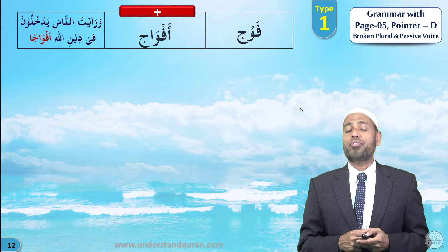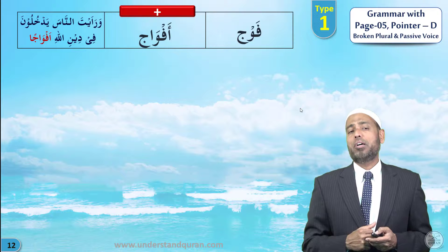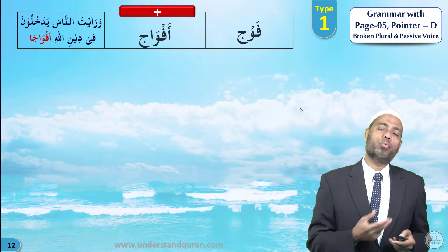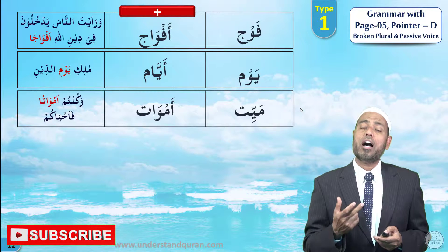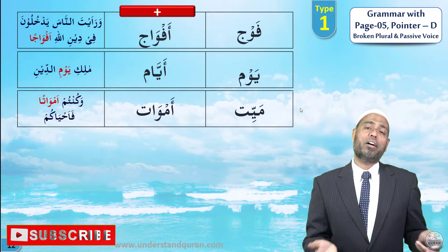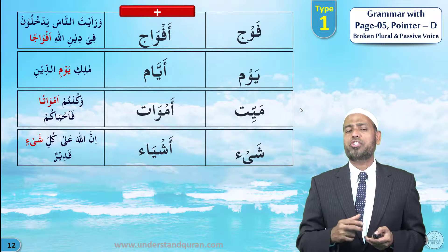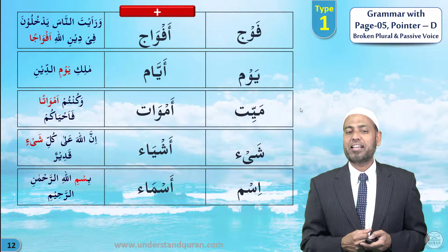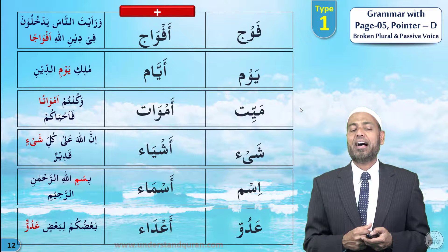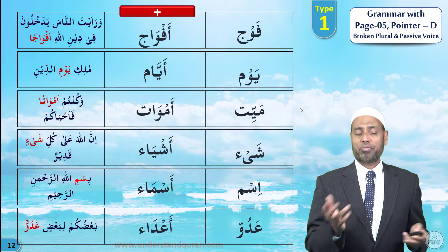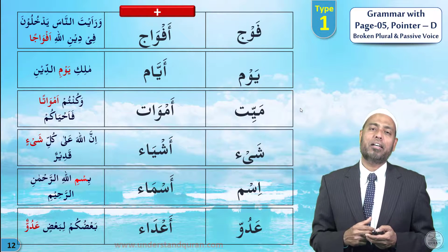Let's take more words on the same pattern. Fawj means crowd or troops; plural is afwaj — wa ra'ayta n-nasa yadkhuluna fi dinil-lahi afwaja. Yawm means day; plural is ayyam — maliki yawmid-din. Mayyit means dead; plural is amwat — wa kuntum amwatan fa-ahyakum. Shay' means thing; plural is ashya' — innallaha 'ala kulli shay'in qadir. Ism means name; plural is asma' — bismillah. 'Aduw means enemy; plural is a'da' — ba'dukum li-ba'din 'aduww — some of you to others are enemies, referring to Shaytan and humans.